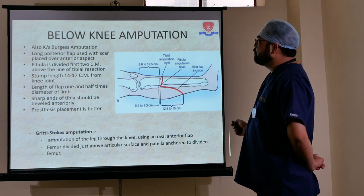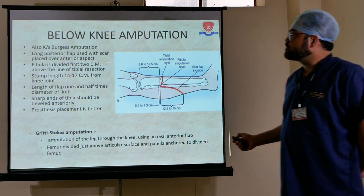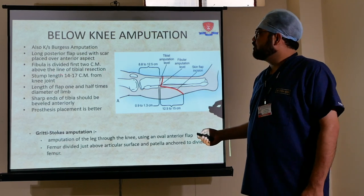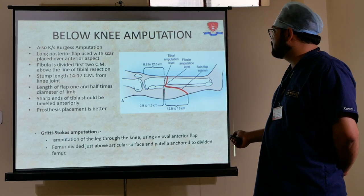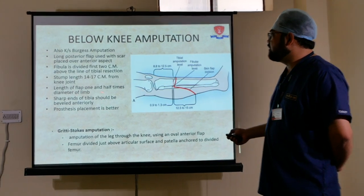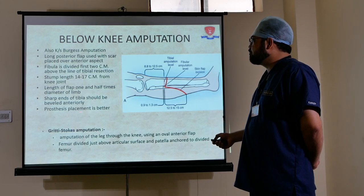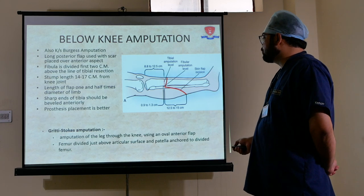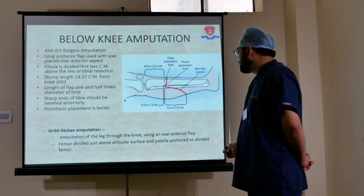Below-knee amputation, also known as the Burgess amputation: a long posterior flap is used with the scar placed on the anterior surface. The fibula is divided first, two centimeters above the line of tibial resection. Stump length should be 14 to 17 centimeters from the knee joint; flap length is one and a half times the diameter of the limb. The sharp anterior edge of the tibia should be beveled anteriorly. Through-knee amputation: using an oval anterior flap, the femur is divided just above the articular surface and the patella is anchored.